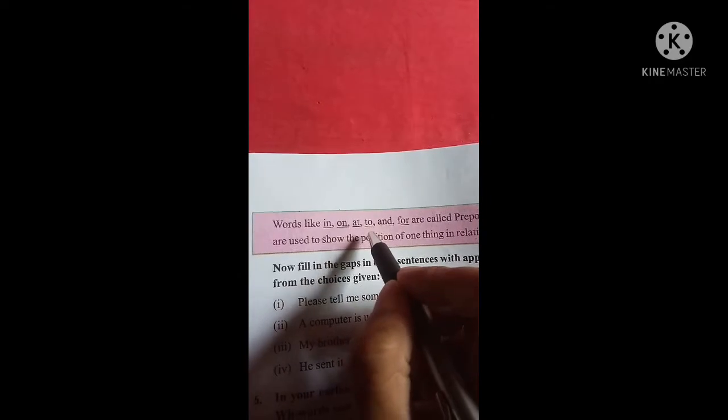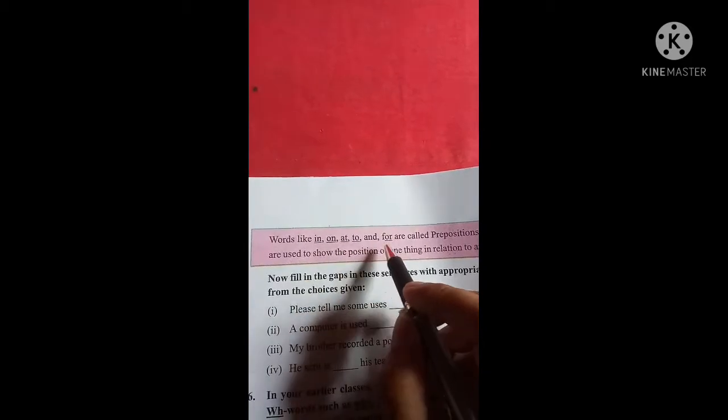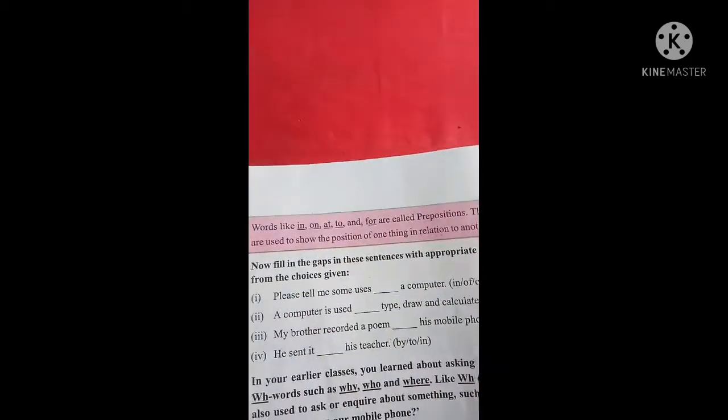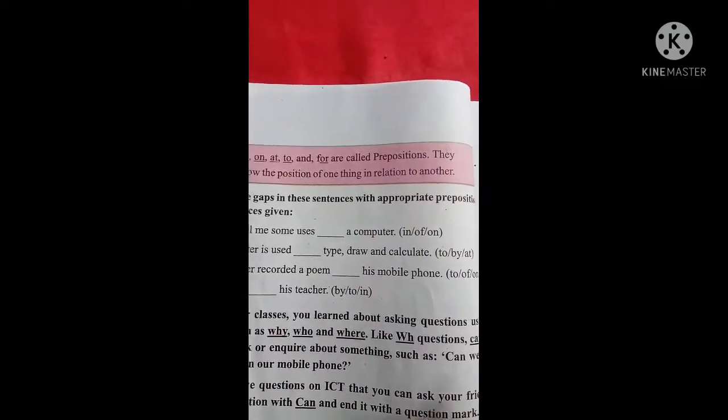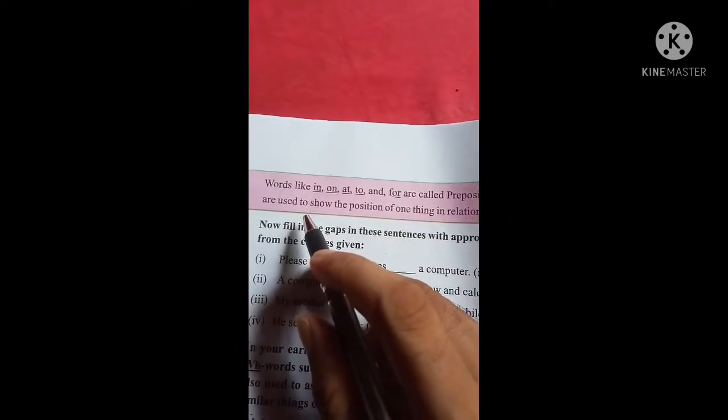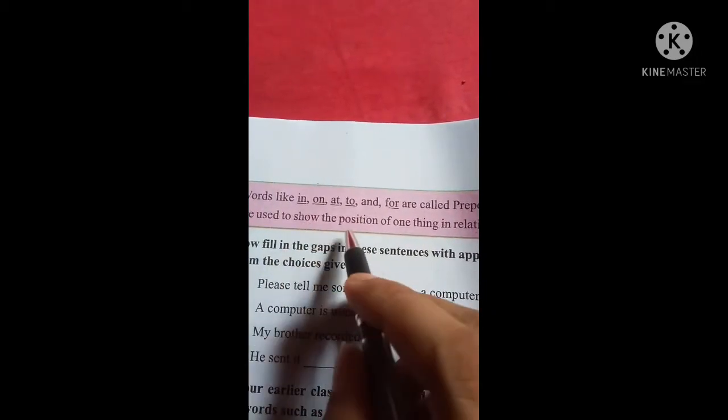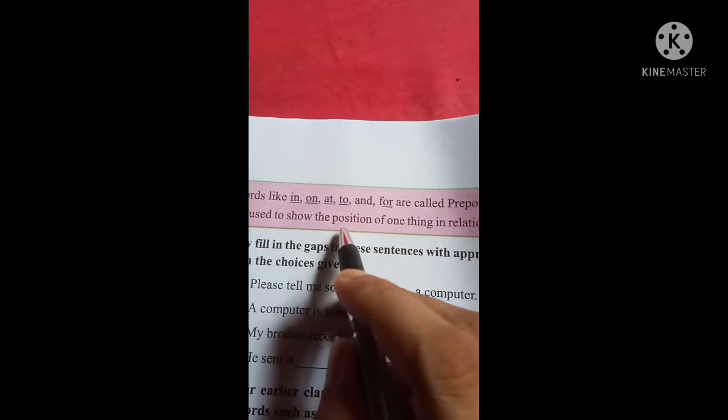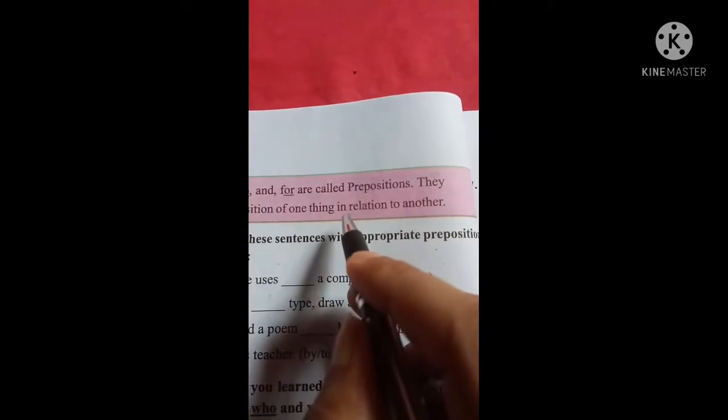Like in, on, at, to, and for are called prepositions. A preposition is used to show the position or the relation of one thing in relation to another.